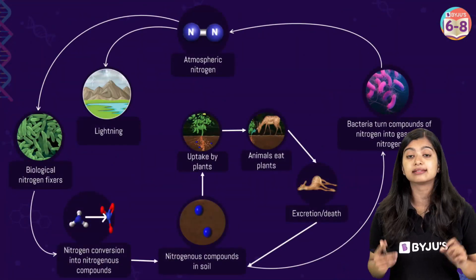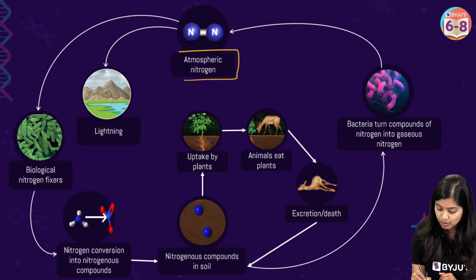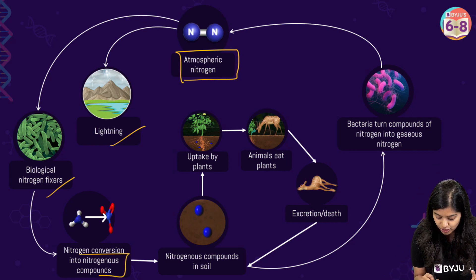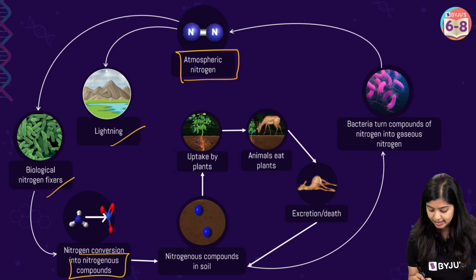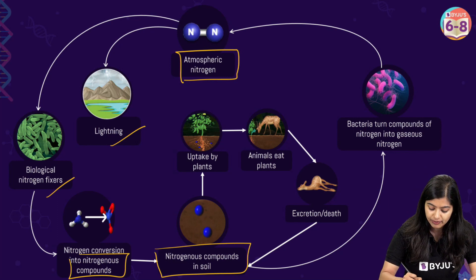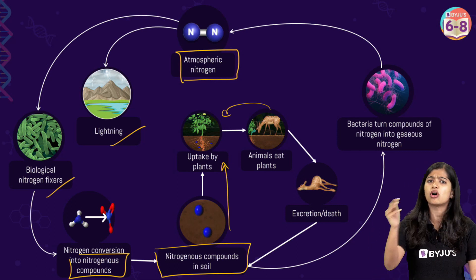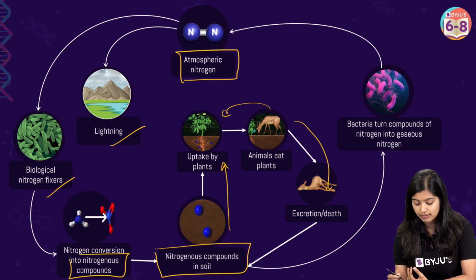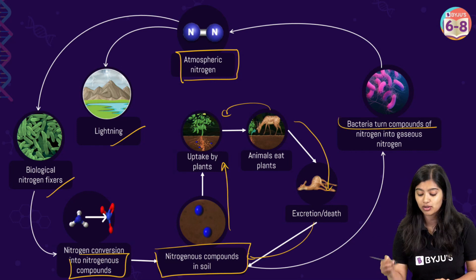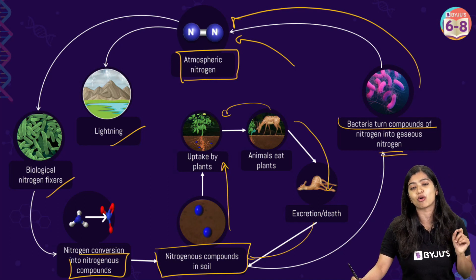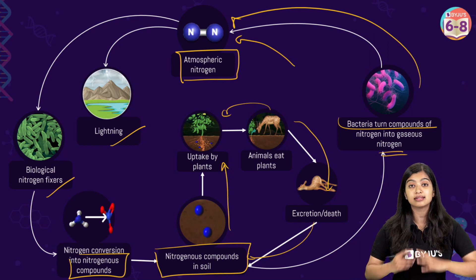To represent this in a simple cyclic manner: atmospheric nitrogen gets fixed by biological nitrogen fixers or by lightning to give nitrogenous compounds. These compounds become available in the soil, plants utilize them, and animals consume the plants or other animals. Eventually, through animal excreta or the death of living organisms, nitrogenous compounds re-enter the soil. Bacteria then act on these compounds and convert them back to gaseous nitrogen, which is sent back into the atmosphere. This is the nitrogen cycle.